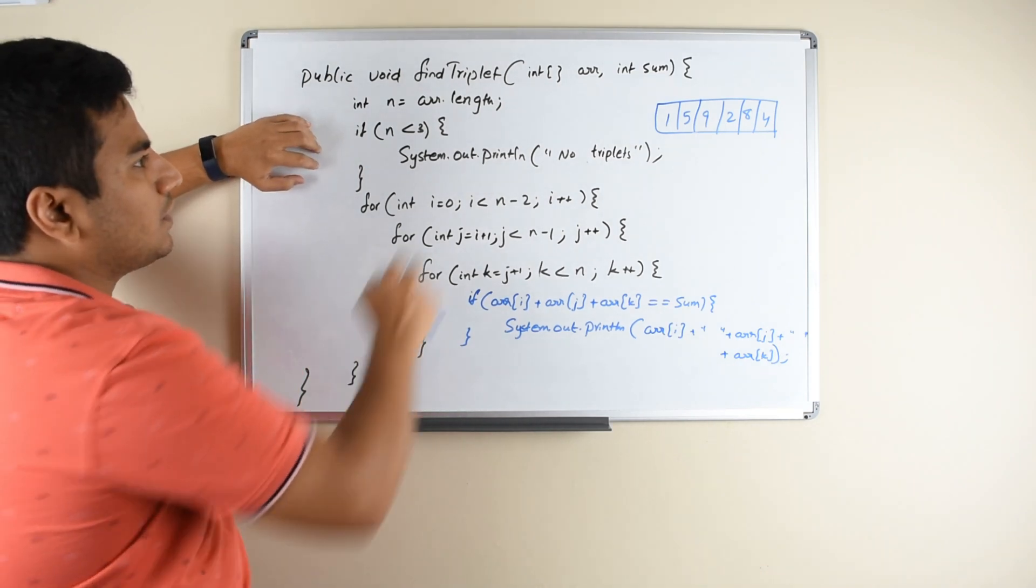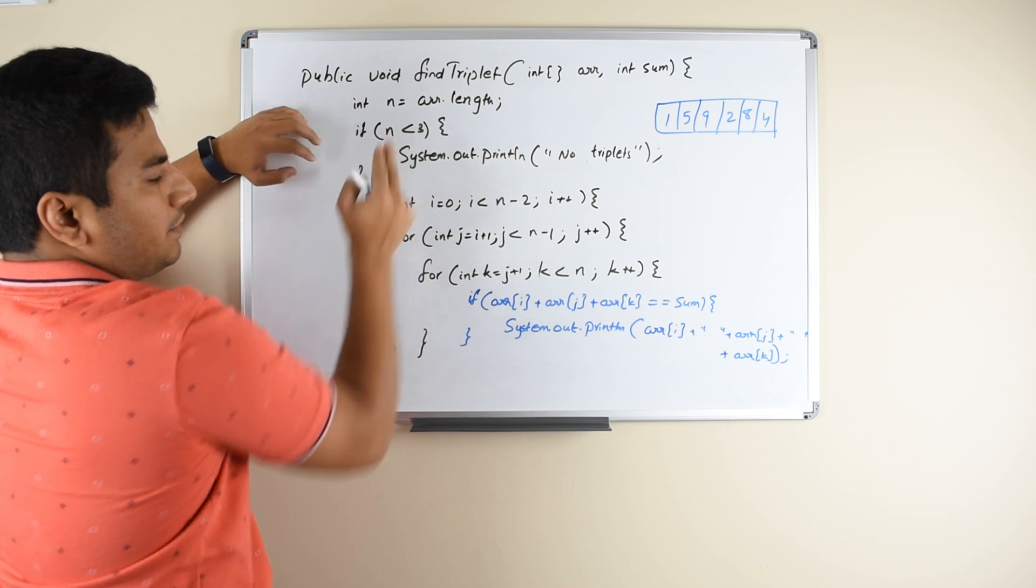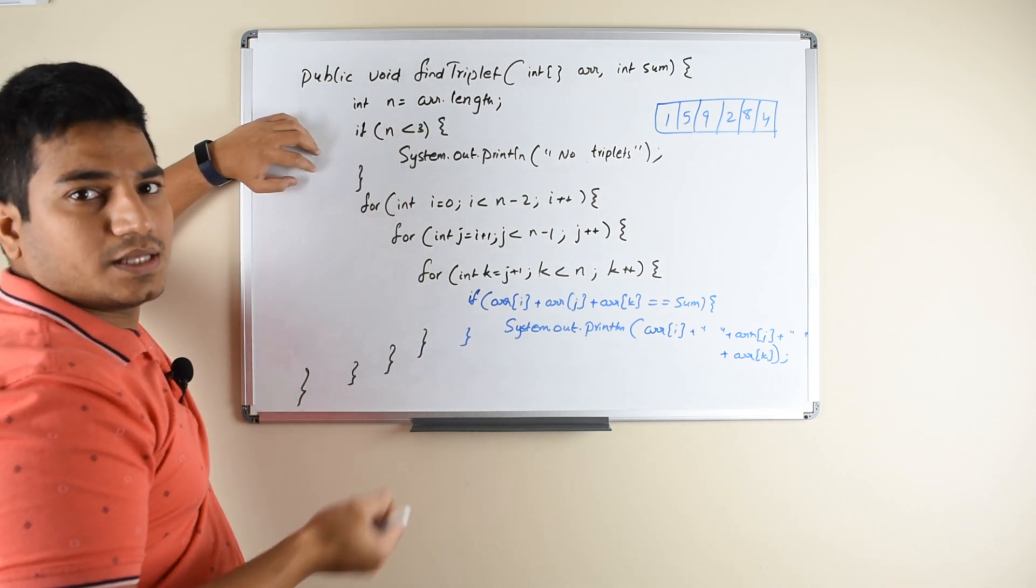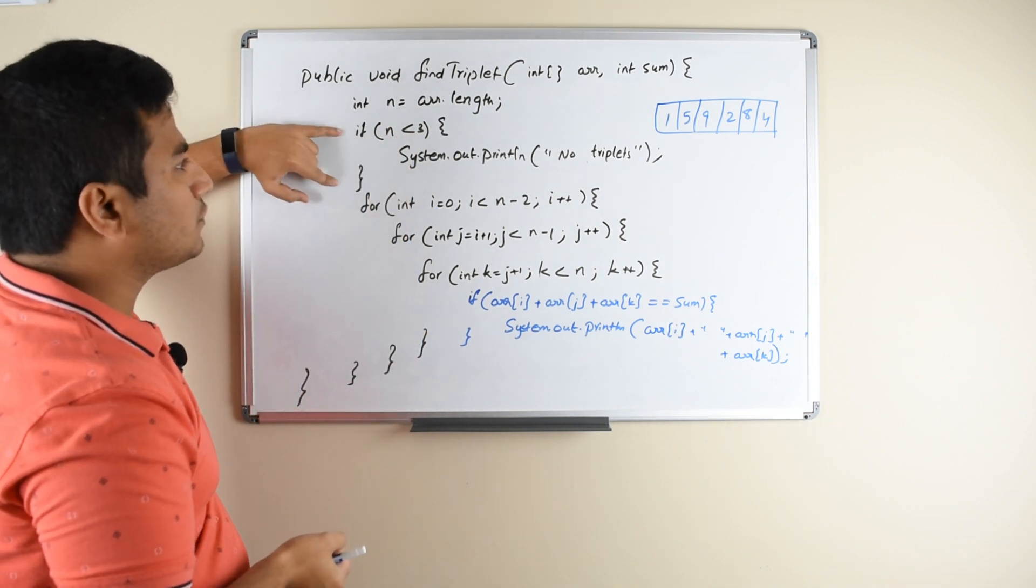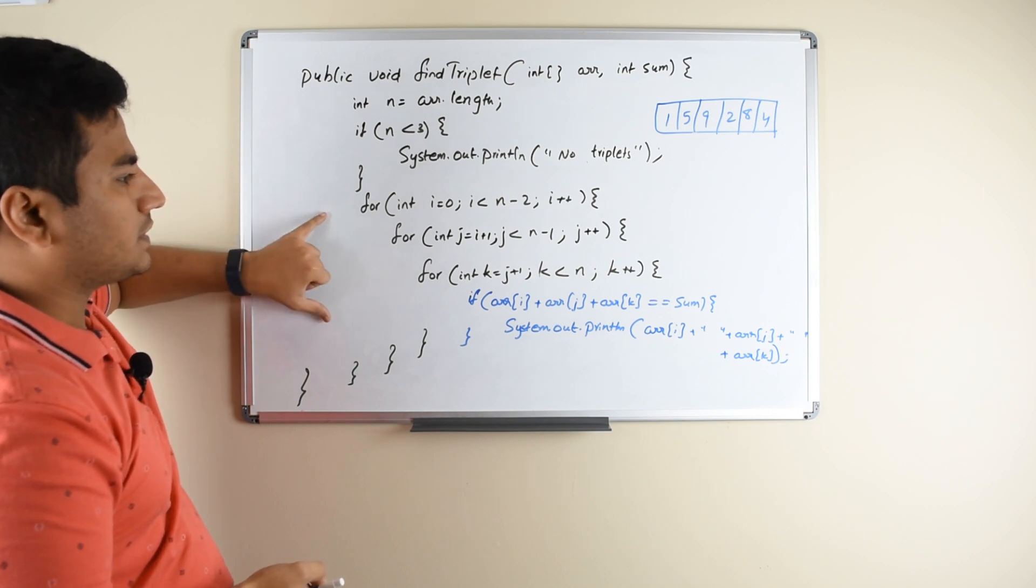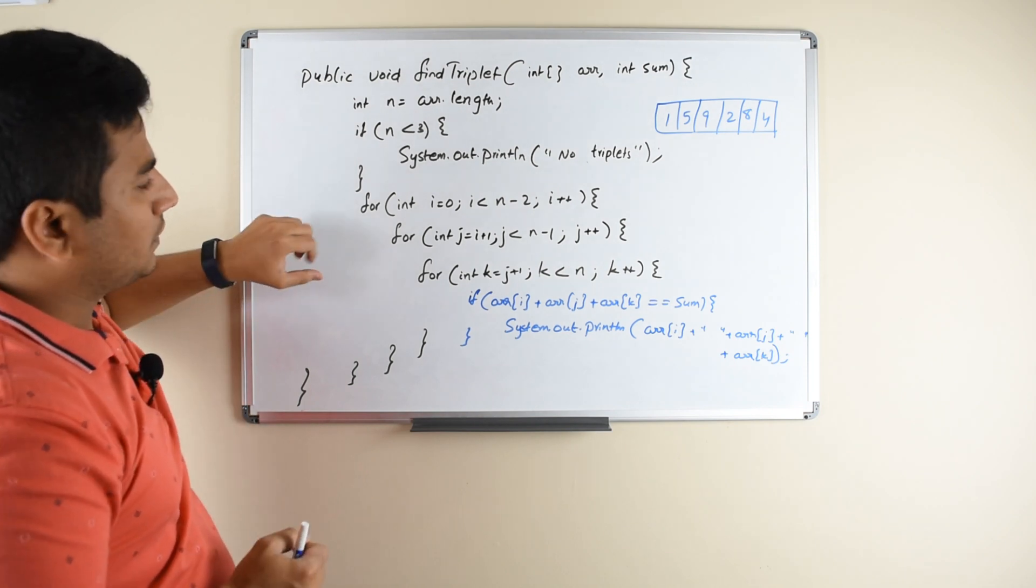The first thing you do is the edge case check. If the array size is less than 3, it means that there are no triplets in this array. Once you do this check, then the actual logic for this application begins.